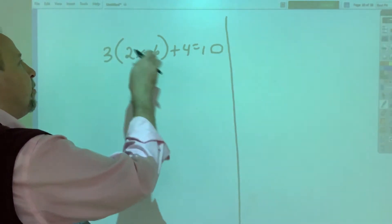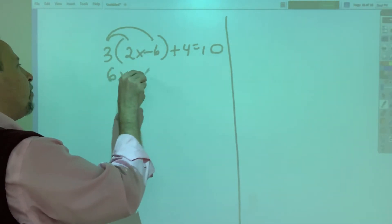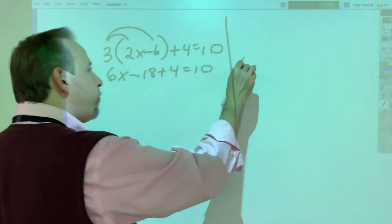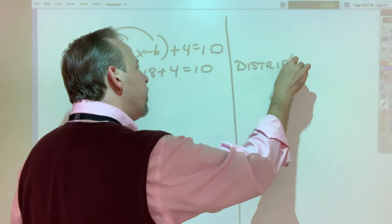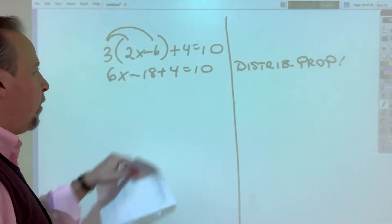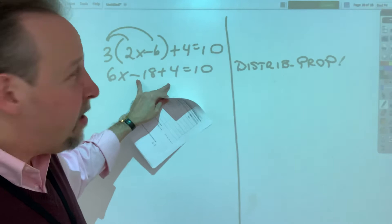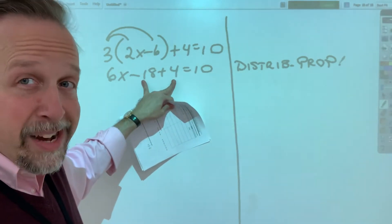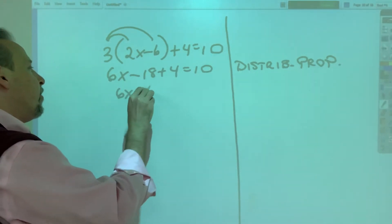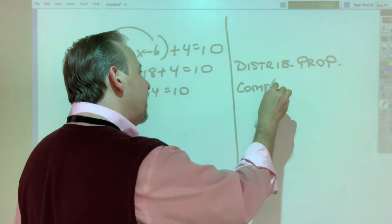Most of you I think did the distribution. So 3 times 2x is 6x minus 3 times 6 is 18 plus 4 equals 10. The reason? The distributive property. Now there's more than one thing we could do next, but because I see a negative 18 and I see a plus 4, I just want to combine them. They are like terms and negative 18 plus 4 is negative 14 equals 10. The reason? Combine like terms.